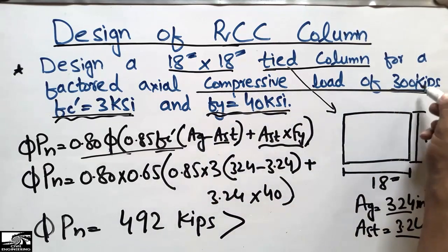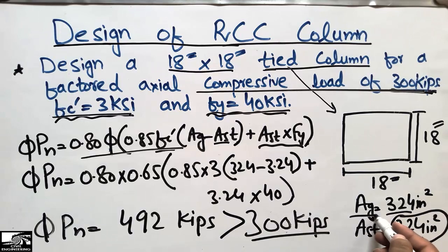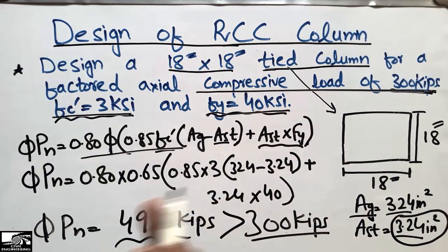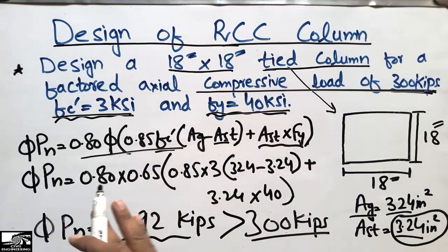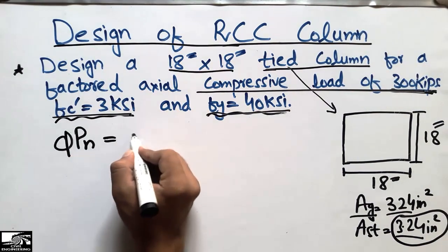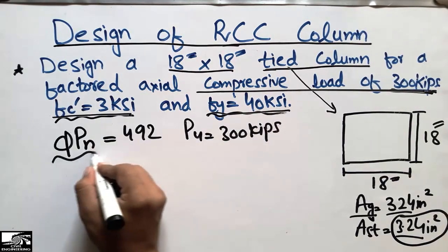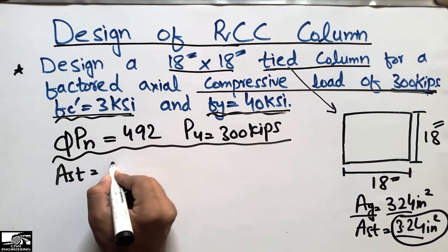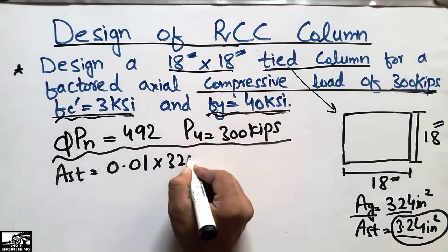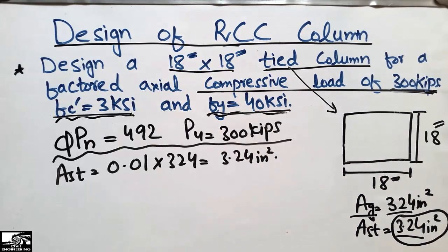The strength φPn = 492 kips is greater than the demand Pu = 300 kips, so the column is adequate. The assumed reinforcement of 1% of the concrete area is sufficient. We do not need to increase to 2% or 3%; the minimum requirement of 1% is fine for this column.